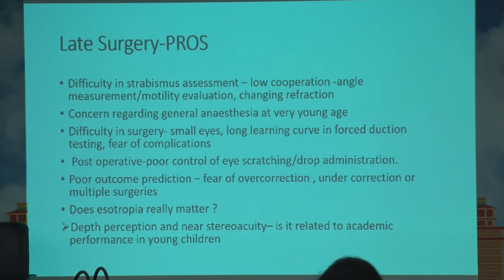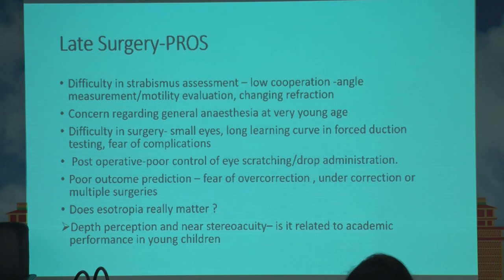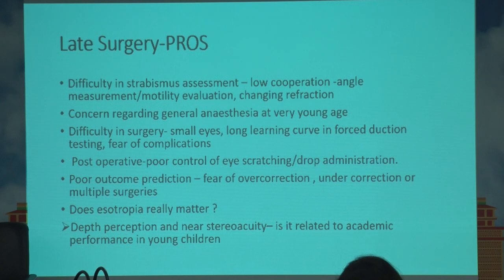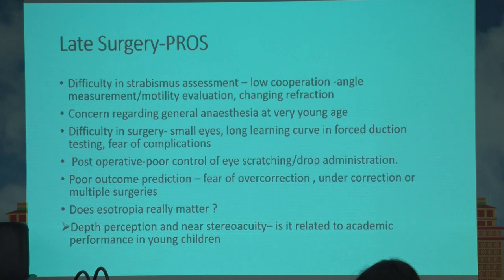The proponents of late surgery argue that with a younger child, measurements are difficult, the effect of refractive error is uncertain, and the impact of accommodation coming in later years is unknown. Concerns regarding general anesthesia, difficulty of performing surgery in very small eyes, and difficulty in assessing forced duction testing also favor late surgery. Poor outcome prediction and fear of overcorrection, undercorrection, and multiple surgeries exist among both parents and surgeons. Late surgery proponents also question whether esotropia actually matters in terms of stereopsis.